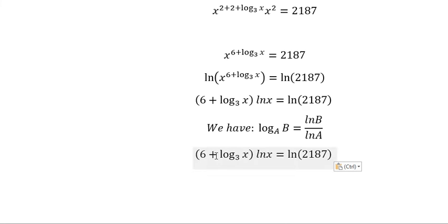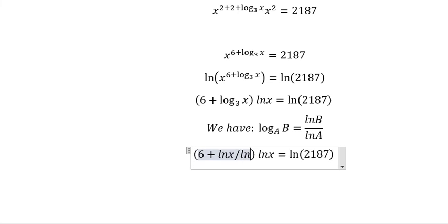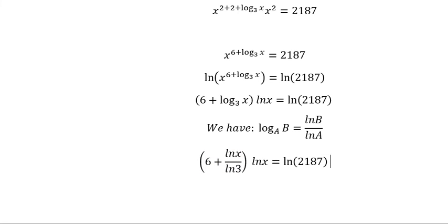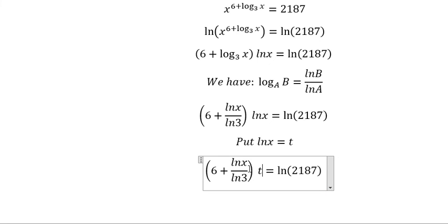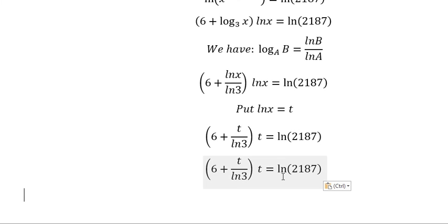We need to transform this into this form, so we have ln(x) over ln(3). Now I will put ln(x) equals t. So I will put t here and here. Now we have t multiplied by this, so we have it like this.